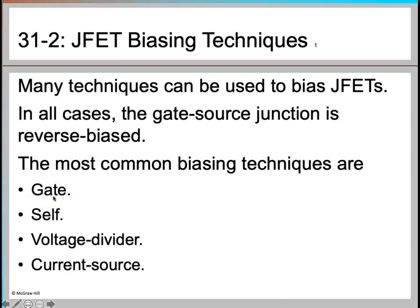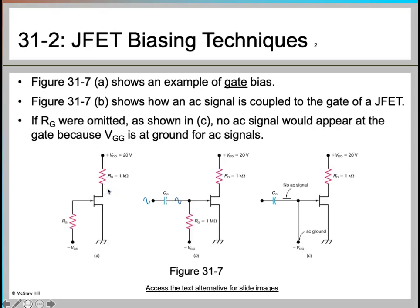There are four different types of biasing techniques we are going to cover in this lecture: first is gate biasing, second is self-bias, third is voltage divider, and fourth is current source. Many techniques can be used to bias a JFET. In all cases, the gate-source junction is reverse biased — you have to keep that in mind.